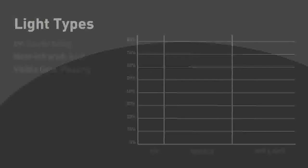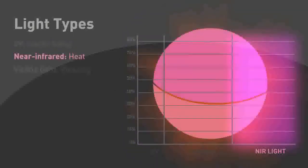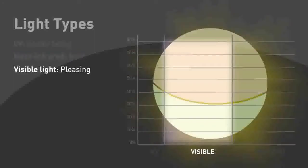Three types of light affect your home environment. Ultraviolet light can slowly damage carpets and other household items. Near-infrared light is responsible for heat gain and contributes to higher energy costs and an uncomfortable interior. In between these is visible light, which is welcome inside the home as illumination.